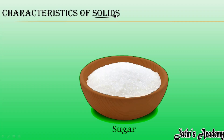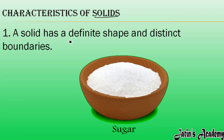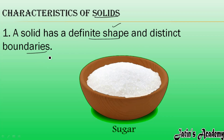Let's study the characteristics of solids — how they differentiate from others. The first characteristic of solids is that they have a definite shape and distinct boundaries. For example, this container has a definite, fixed shape. I cannot change the shape of this container. The boundaries of a solid are particular and visible to us — these are the distinct boundaries of this container.